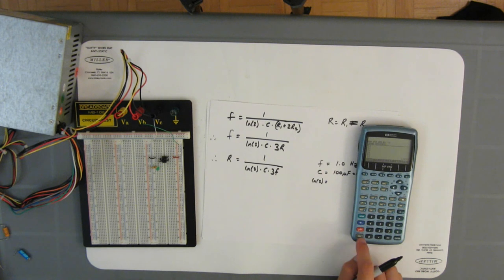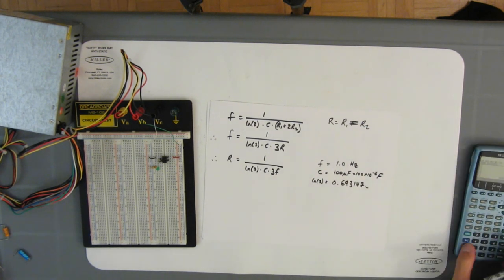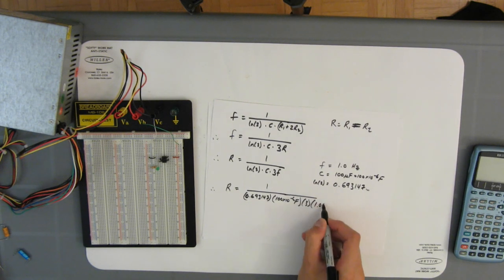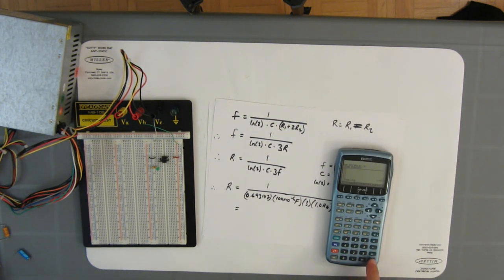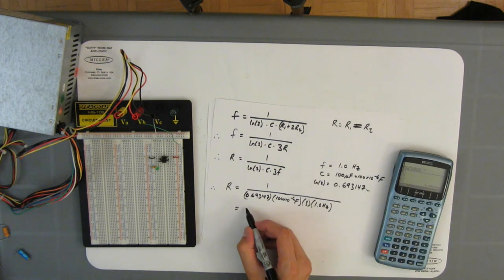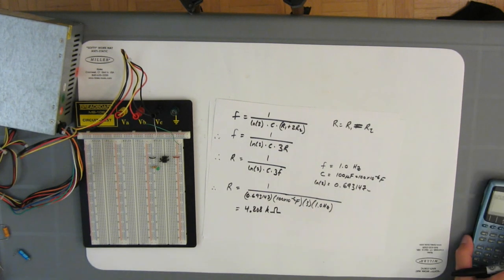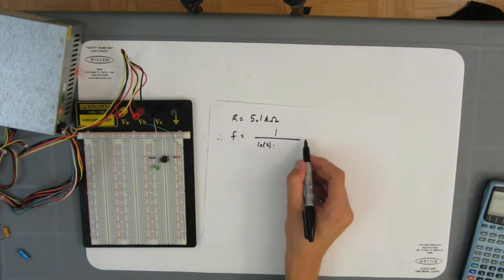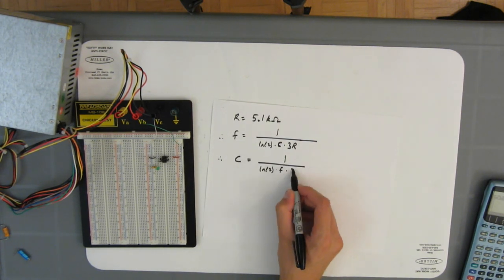Since we don't care about the circuit's duty cycle, we'll just use the same value for both resistors. Divide both sides of the equation by F and multiply them by R, and we get a formula for the resistor values. Then we just plug in 100 microfarads and one blink per second, and presto! 4,807 ohms. Hmm, I don't have any 4,807 ohm resistors, but I do have a 5,100 ohm resistor, so I'll use those.